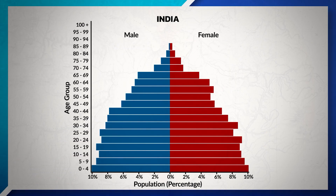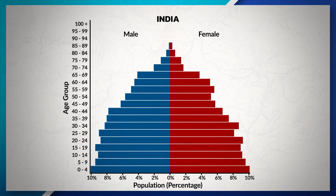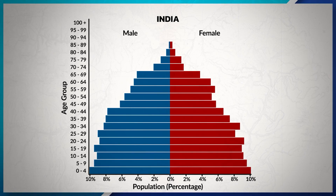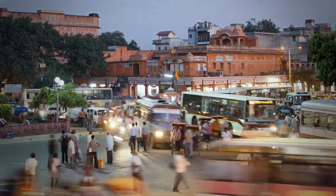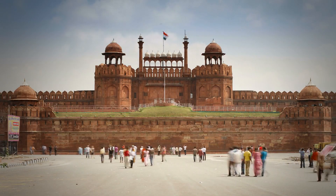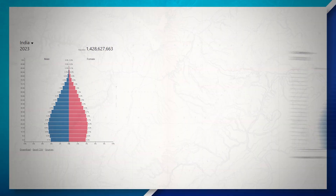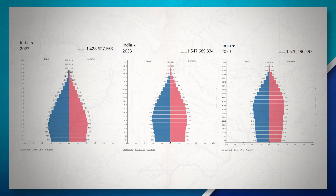In India, we can see that the majority of the population is now clustering further up on the graph, with less of the population in their pre-reproductive years, indicating that India is now in Stage 3 of the demographic transition model. India is still growing, but the growth is becoming more moderate. As time passes, the amount of people entering their reproductive years will start to decrease, as population growth continues to slow.